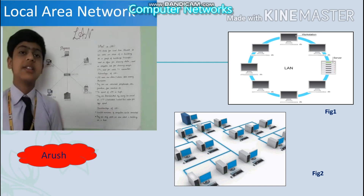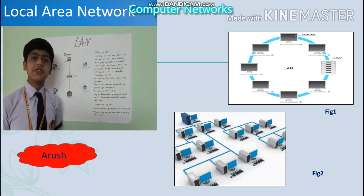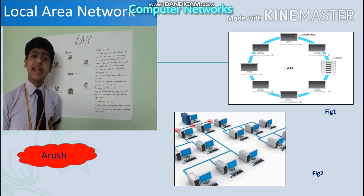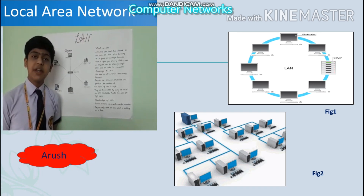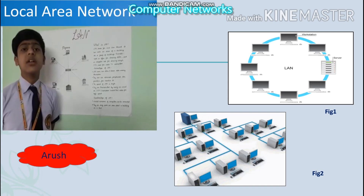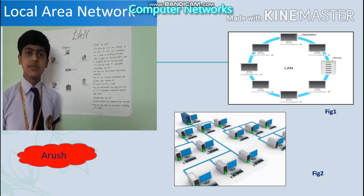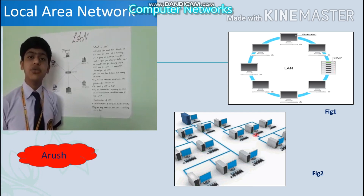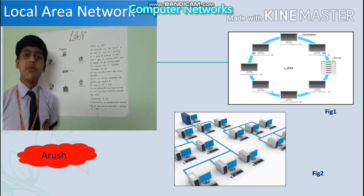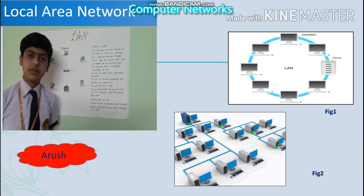Now let us see some advantages of LAN. LAN users can store and share data among themselves. They can use common peripherals like printers, fax machines, etc. The speed of LAN is high. They are transmitted by using UTP or coaxial cables for high speed. Here UTP refers to Unshielded Twisted Pair.